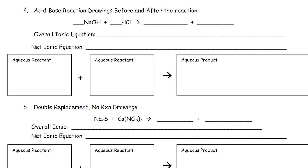For number four with the acid-base reaction, we're going to bond our cation of sodium to the anion chlorine, and then our cation of hydrogen to the anion of hydroxide. Remember, your cations and anions switch partners for the products that you're creating on the other side.